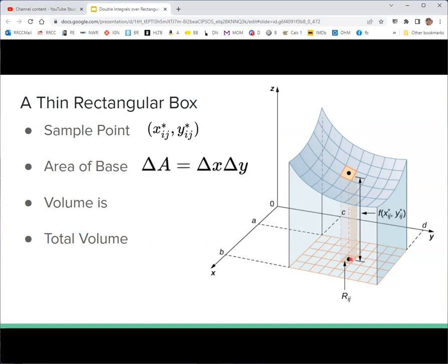So we think of it as a thin rectangular box or solid. So sample point xij star, yij star. Now the area of the base is actually the same for all these rectangles, because we were uniform in the delta x's and delta y's. So the area delta A for each little rectangle is delta x times delta y. But the volume for each will be different because the surface has different heights. And so we need to take that area and multiply it by the value of the function at your sample point. So volume of a box is length times width times height.